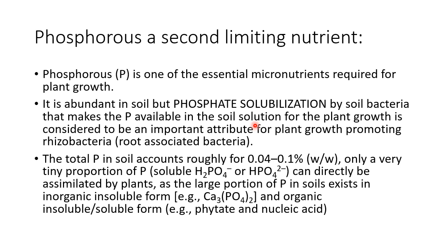Phosphorus is a second limiting nutrient. It is one of the essential macronutrients required for plant growth. It is abundant in soil but not readily available for plants. Phosphate solubilization by some soil bacteria makes the phosphorus available in the soil solution for plant growth, and thus it is considered an important attribute for plant growth promoting rhizobacteria.